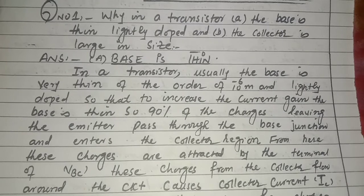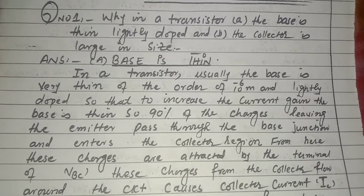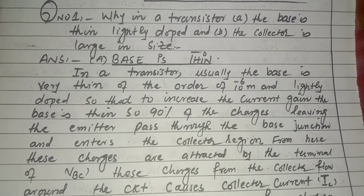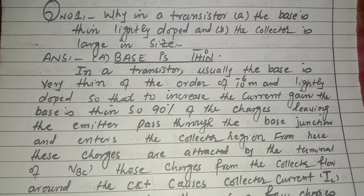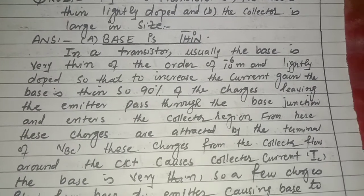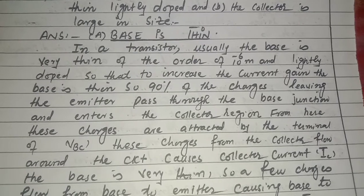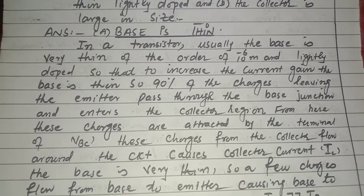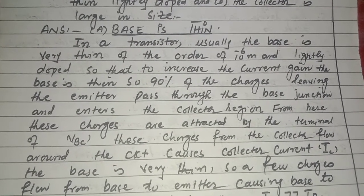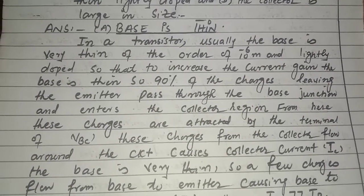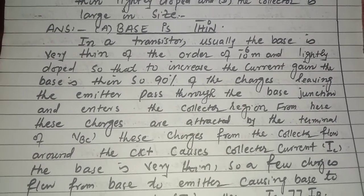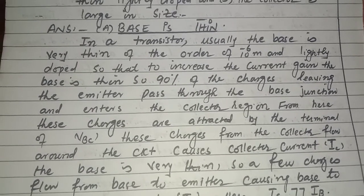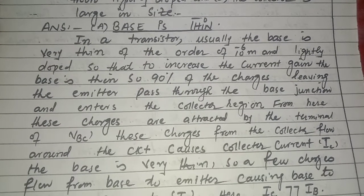So question ye hai ke transistor mein jo base hai, woh lightly doped kyun hota hai, aur collector ka size bada kyun hota hai? In a transistor usually the base is very thin — of the order of 10 to the power minus 6 meter — and lightly doped. Kyunke transistor jo hum banate hain, toh do baton ka khayal rakhte hain: ek hai doping level, aur doosra hai size. Toh base doping ke lihaaz se bohut kam hai, jabke collector size ke lihaaz se bohut bada hai.